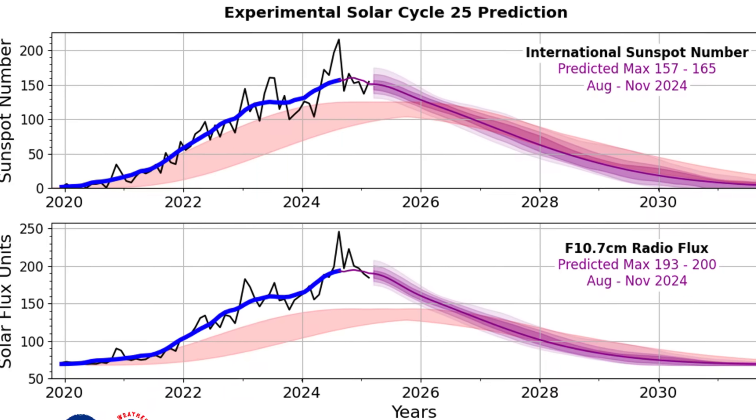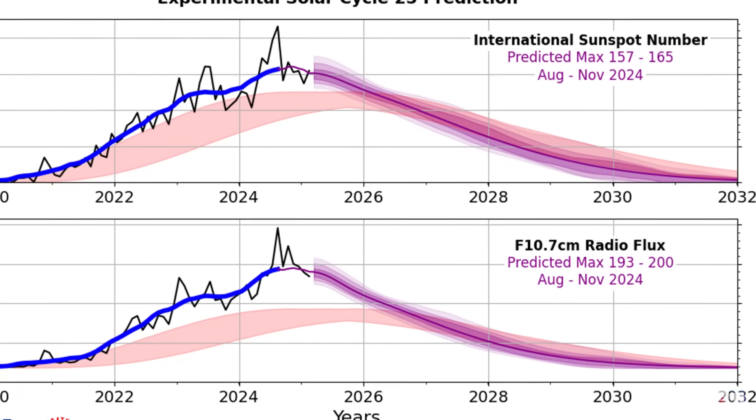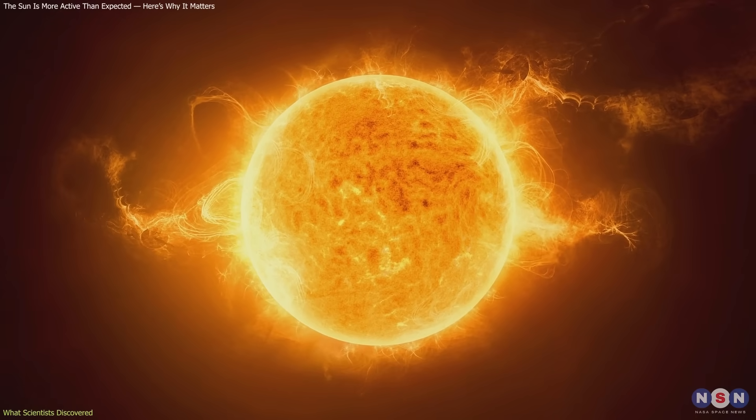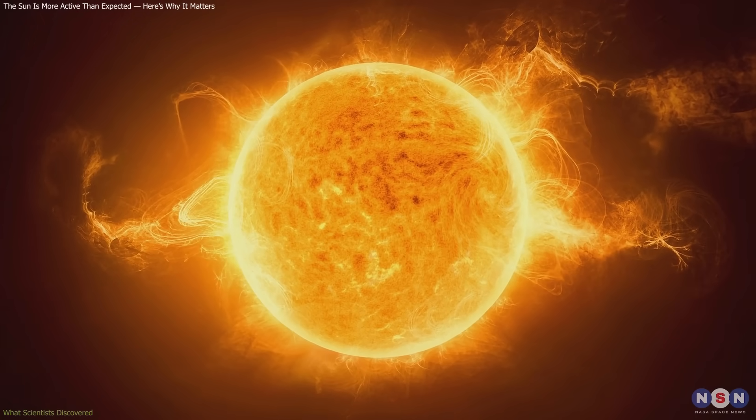What began as a mismatch between prediction and observation has now become a deeper puzzle. Why did it grow more active after such a weak cycle? And what does it signal about its longer-term behavior?